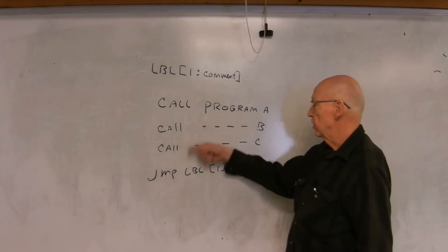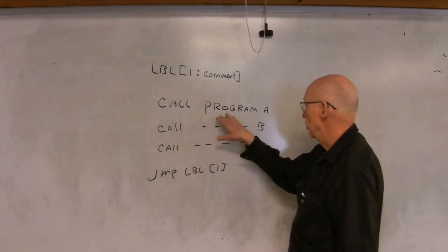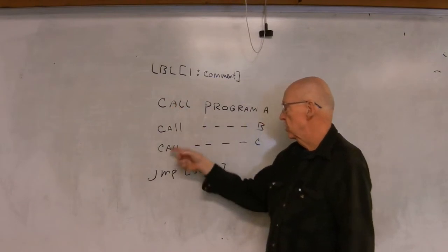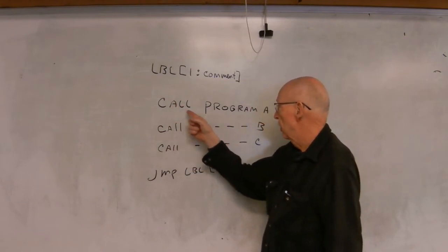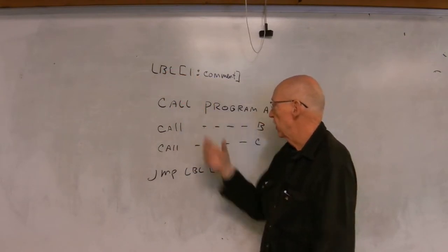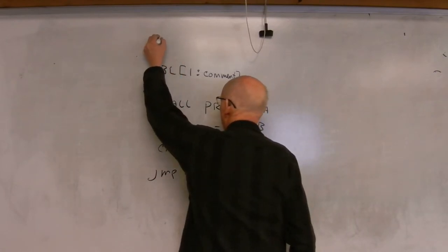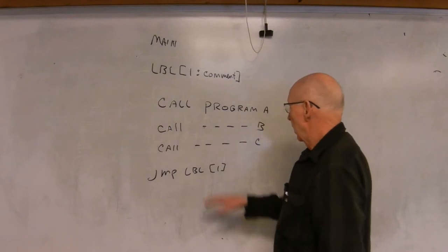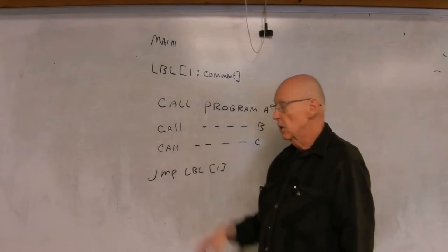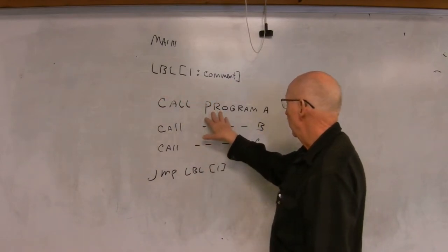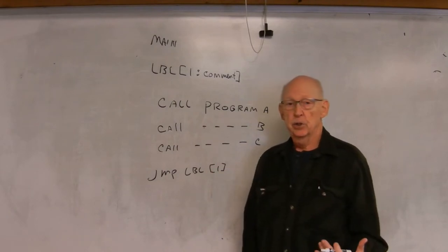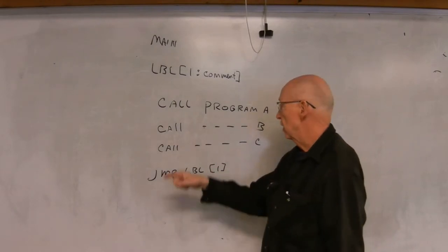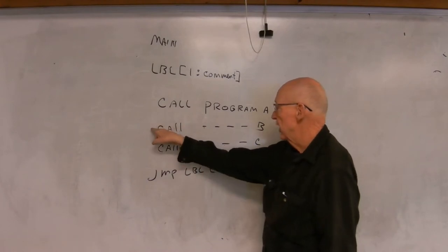And just do this continually. Now what happens here is you don't need to have any other instructions. These could be standalone programs, but when this program—let's say this is your main program, just give it the name main—it recognizes this line as a label, calls program A, program A executes, and then when program A is finished it comes back and executes the next line.